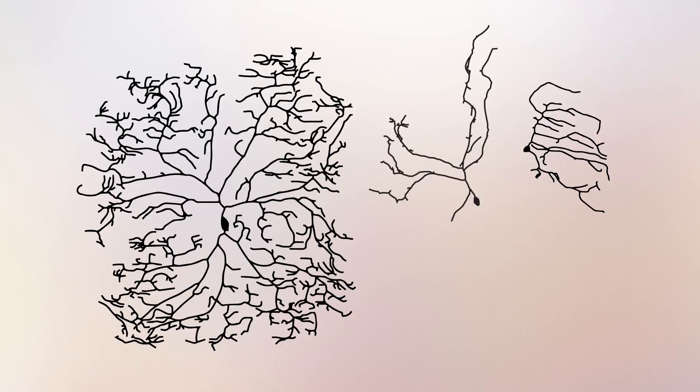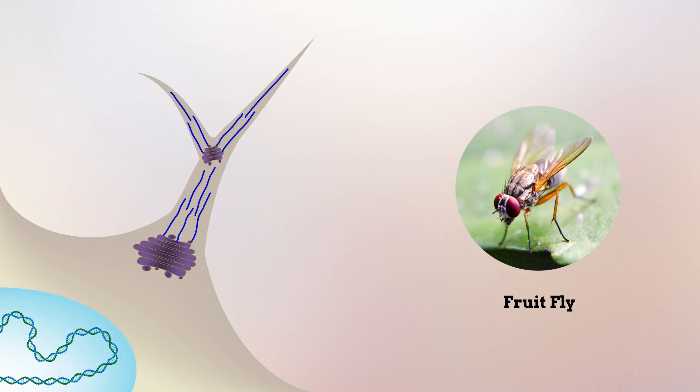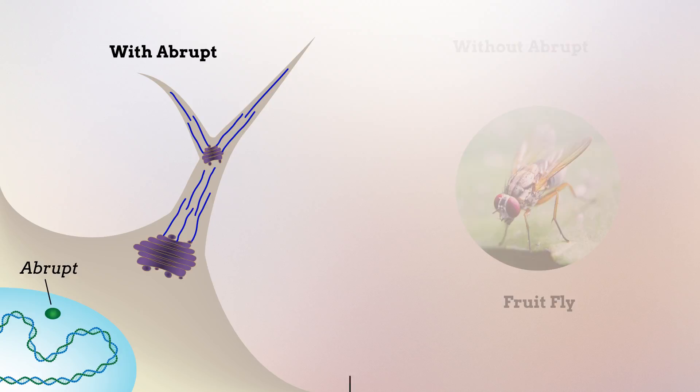This study found that the branching pattern of neurons is determined by a set of proteins that organize microtubules. The researchers used fruit flies to examine how the dendritic branching process is controlled. In searching for factors that might affect the formation of dendrite-stabilizing microtubules, they found that the transcription factor abrupt restricts dendritic branching by changing the arrangement of microtubules.